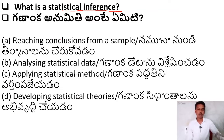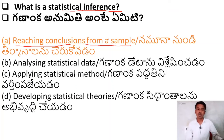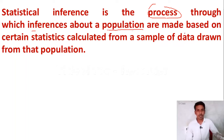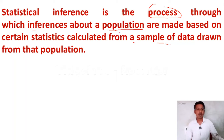What do you mean by statistical inference in research methodology? The right answer is Option A — reaching conclusions from a sample. Statistical inference is the process through which inferences about a population are made based on certain statistics calculated from sample data. Sometimes you are not going to investigate the entire population; you select a sample and apply the result to the whole population. That is known as statistical inference.